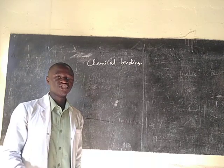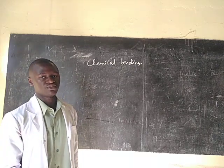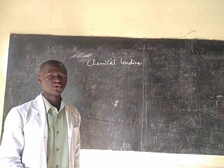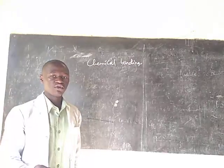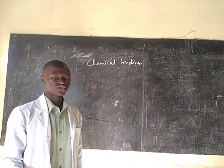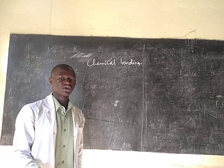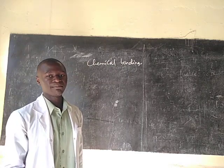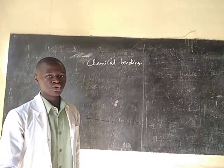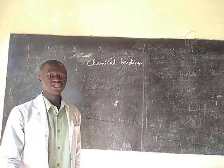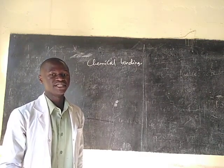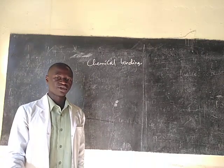What joins between two atoms to form a compound or a molecule is what we call a bond. A bond is like a glue which joins two or more atoms to form what we call a molecule or a compound. Bonding is the process of putting what connects them and gives them stability.